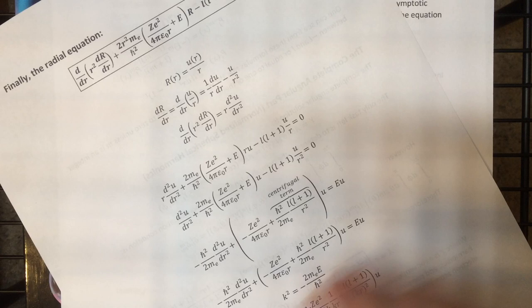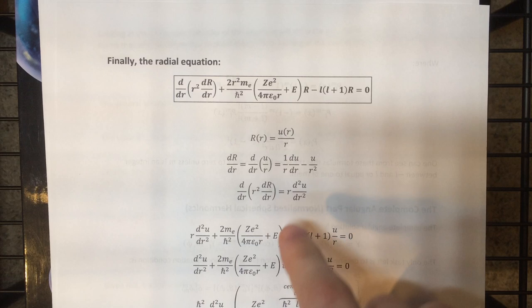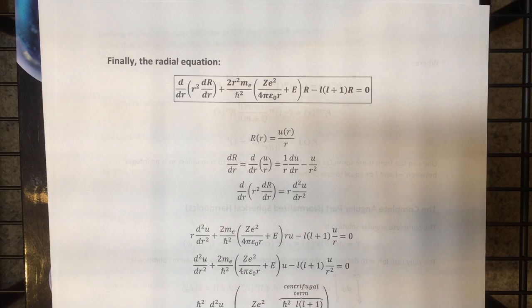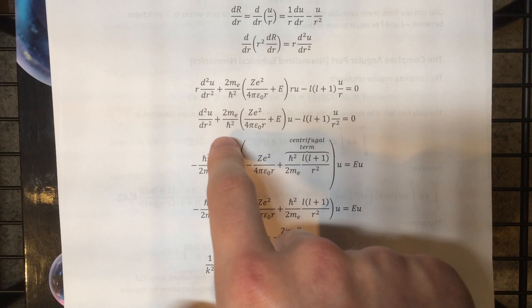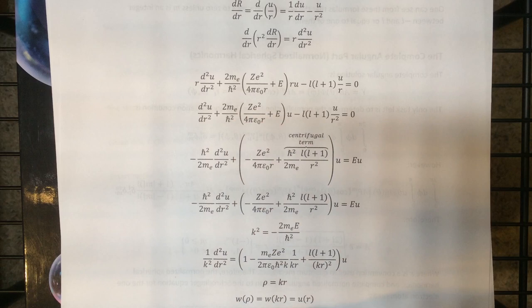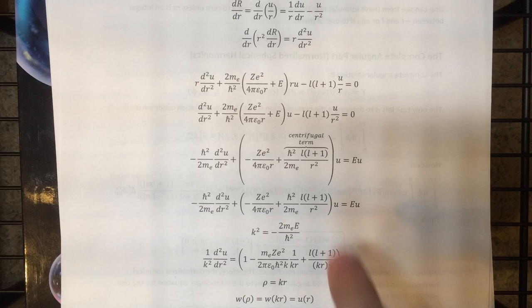The first thing we can do is simplify the derivative term in the radial equation that we got through separation of variables by applying an ansatz. It simplifies that term, and after inserting it, dividing by R, multiplying by a minus sign, and multiplying by the multiplicative inverse of this factor, we get something that looks like another Schrödinger equation — specifically like a one-variable Schrödinger equation. This term ends up functioning like a centrifugal term in the potential, which makes a lot of sense given the angular nature of the problem.